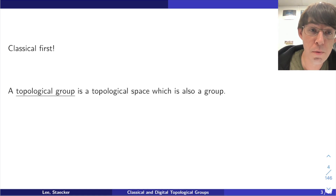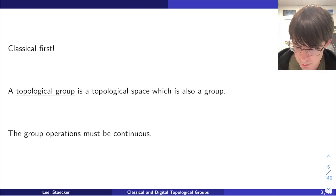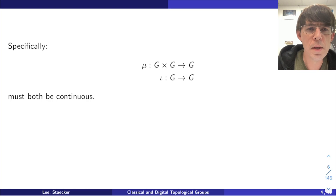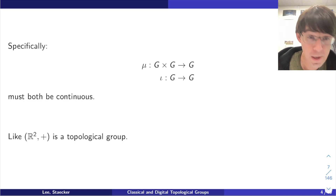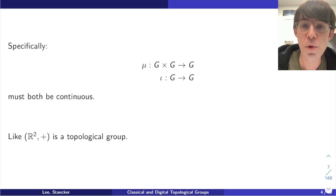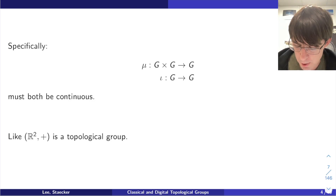A topological group is a topological space which is also a group, and the group operations have to be continuous with respect to the topology, so there is some compatibility between the topological space and the group structure. The notation I'll use is mu for the multiplication and iota for the inverse. In order for it to be a legal topological group, those two operations must be continuous. For example, R^n with addition is a topological group because addition is continuous with respect to the ordinary topology on R^n.